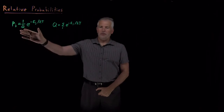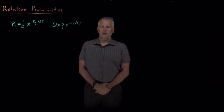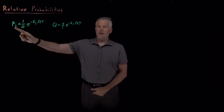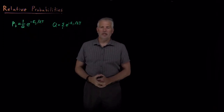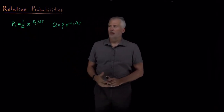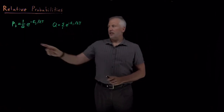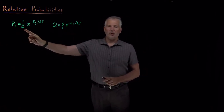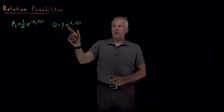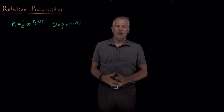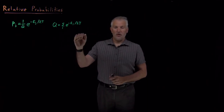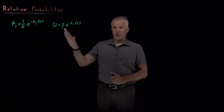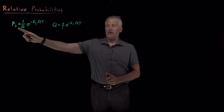The Boltzmann probability distribution tells us how to find the probabilities that a system is going to be in a particular state if we know the energies of the states. We need to know the energies of all the states in order to calculate Q. Q is the sum of the Boltzmann factors — the sum of e to the minus energy over kT for all the states the system can occupy. If we know all the energies, we can calculate Q and the probabilities.